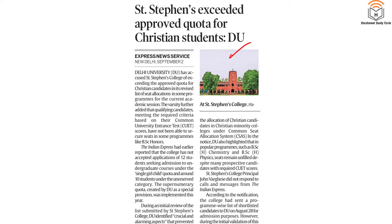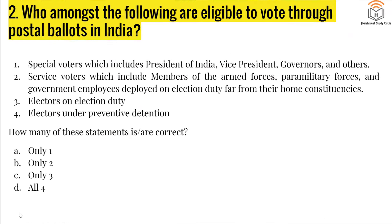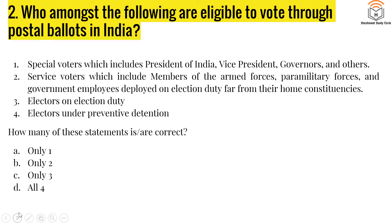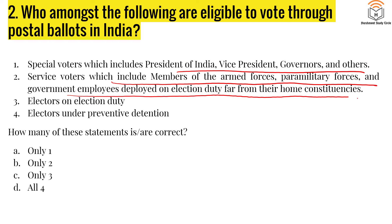Next question, number two: who amongst the following are eligible to vote through postal ballots in India? One — special voters, which includes the President of India, Vice President, Governors and others. Two — service voters, which include members of armed forces, paramilitary forces, and government employees deployed on election duty far from their home constituencies. Three — electors on election duty, such as school principals and government officers. Four — electors who are under preventive detention. How many of these can vote by postal ballot?